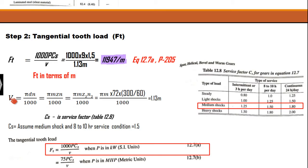Now we have the equation for velocity. We do not have the values of D, so we substitute D in terms of module. Upon substituting, we get the value of V in terms of M as 1.13M. This value is then substituted into the tangential load equation.